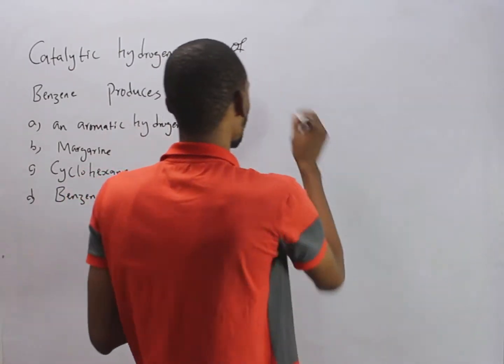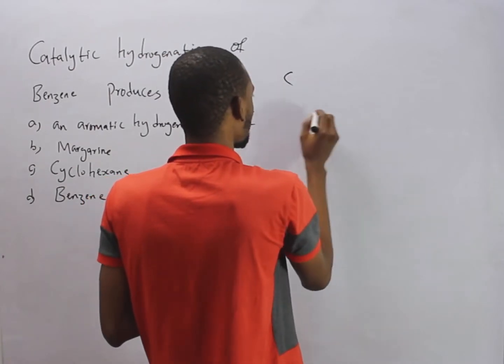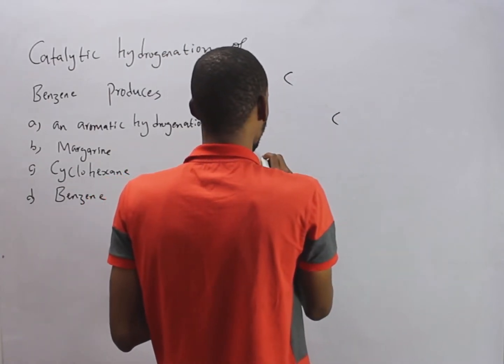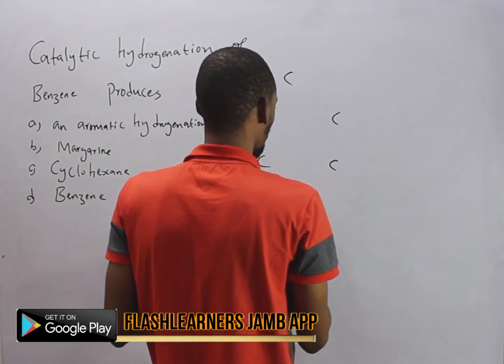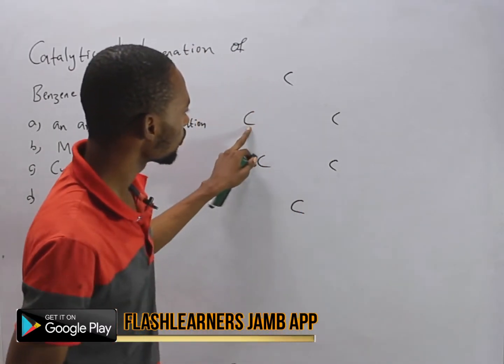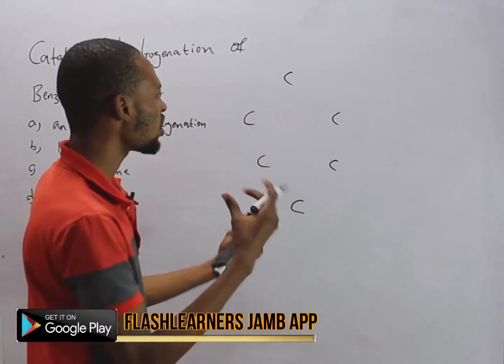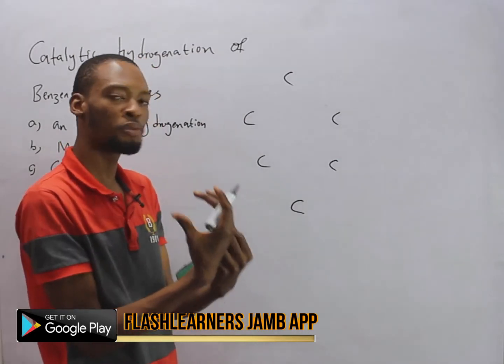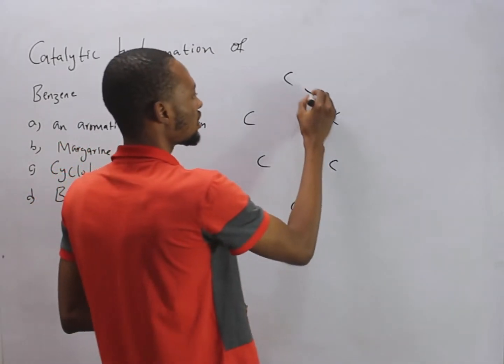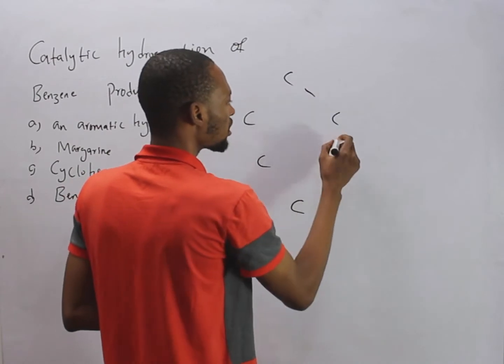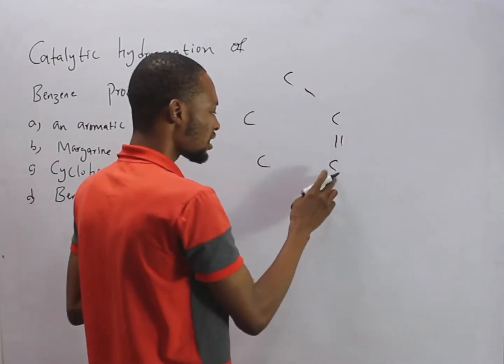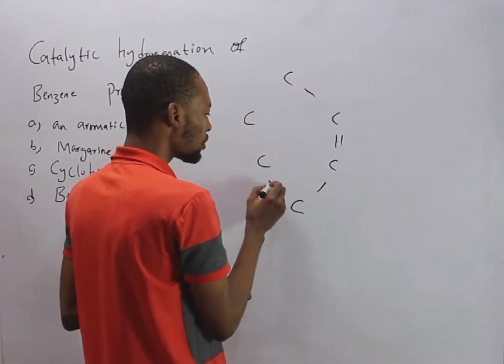So this is benzene for you. See that's 6 carbon: 1, 2, 3, 4, 5, 6. And there's alternate double to double carbon bond, which means that this is carbon to carbon single bond, the next one will be double bond. This is carbon to carbon single bond, the next one will be double bond.